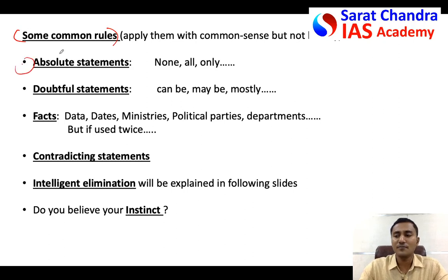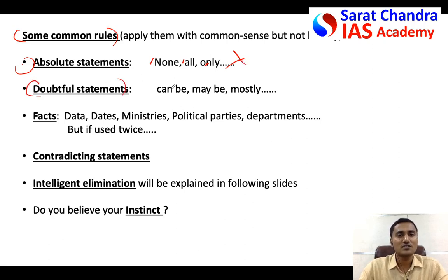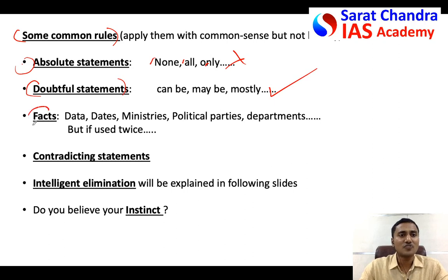One common rule everyone knows: absolute statements — for example, if a statement contains words like 'none,' 'all,' or 'only' — are generally wrong. I will give examples where they are also correct, but mostly they are wrong. Statements which are doubtful, for example 'it can be' or 'it may be,' are generally correct in the exam.